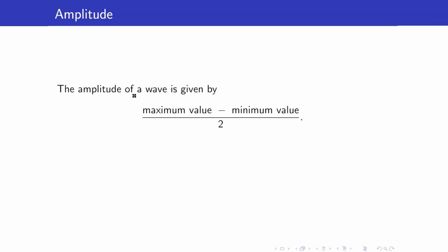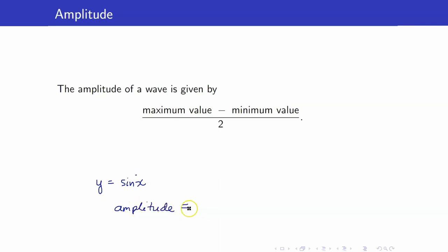The amplitude of a wave is given by its maximum value minus minimum value divided by 2. Let us discuss the amplitude of y equals sine x. Its maximum value is 1, minus its minimum value, negative 1, divided by 2. So this is equal to 1.